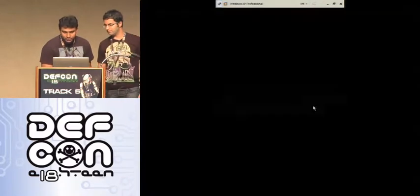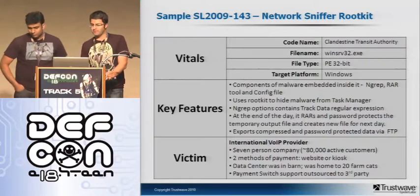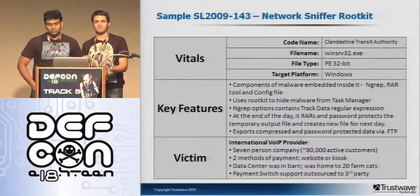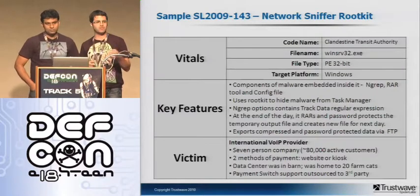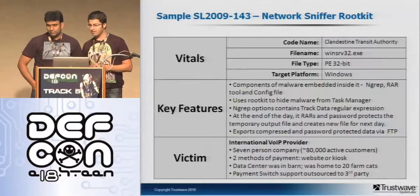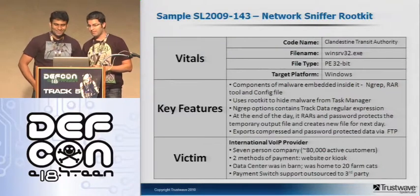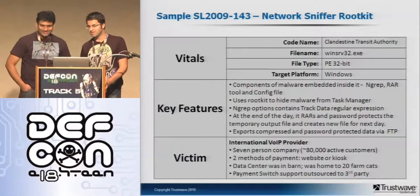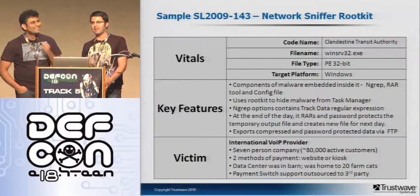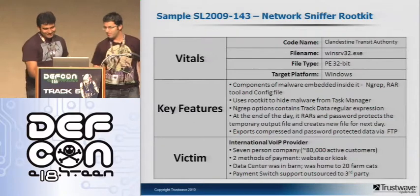In the interest of time, quickly: this environment was an international VoIP provider with two methods of taking data — kiosks where people bought prepaid cards, and a website. In their hosting center, a server processed all this data. When we went to investigate, we walked up and about 20 cats came out of the data center, because it was really in a barn in the middle of nowhere where this hosting provider operated.